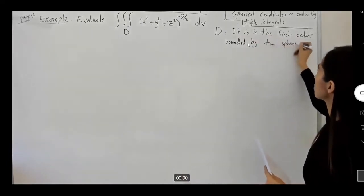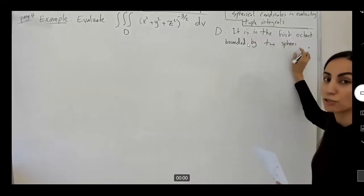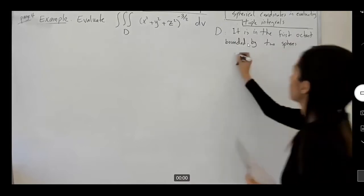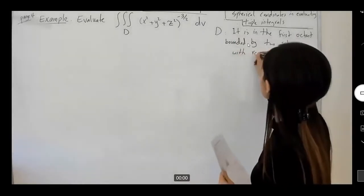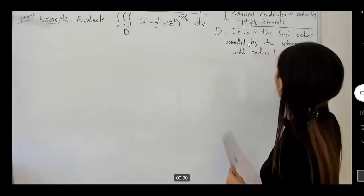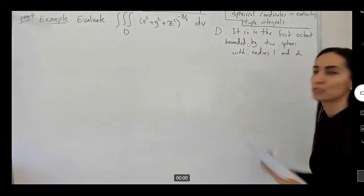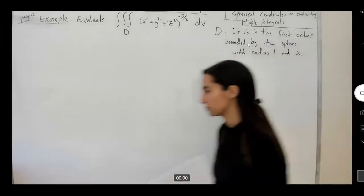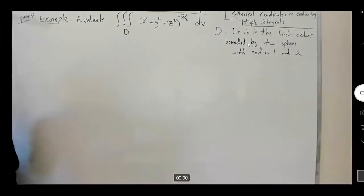Spheres. Spheres means that we can do spherical coordinates with radius one and two. Here we go. Let's take a look at our graph, let's visualize it.